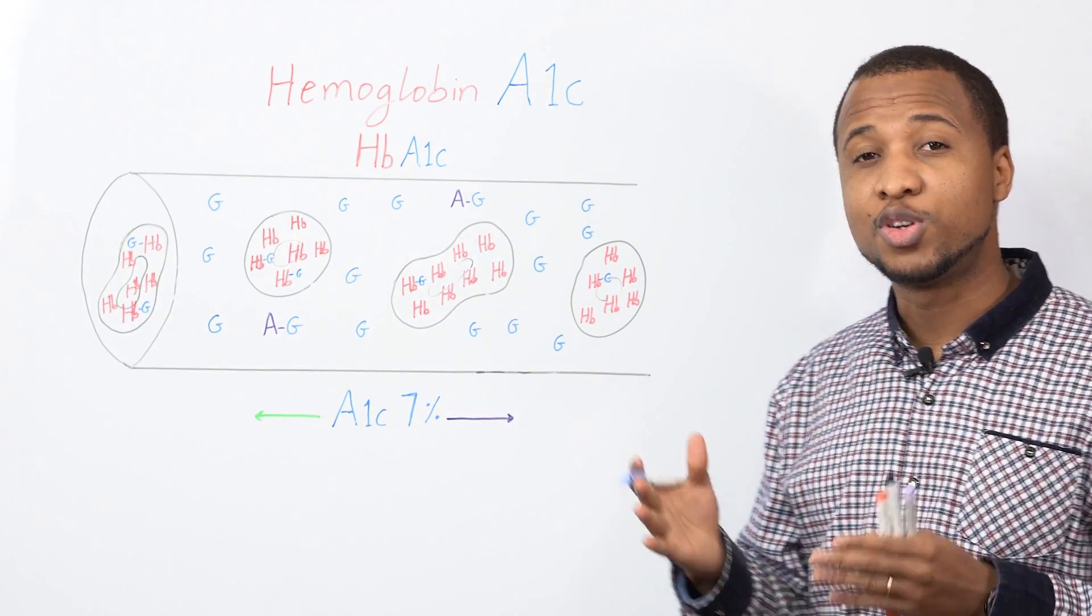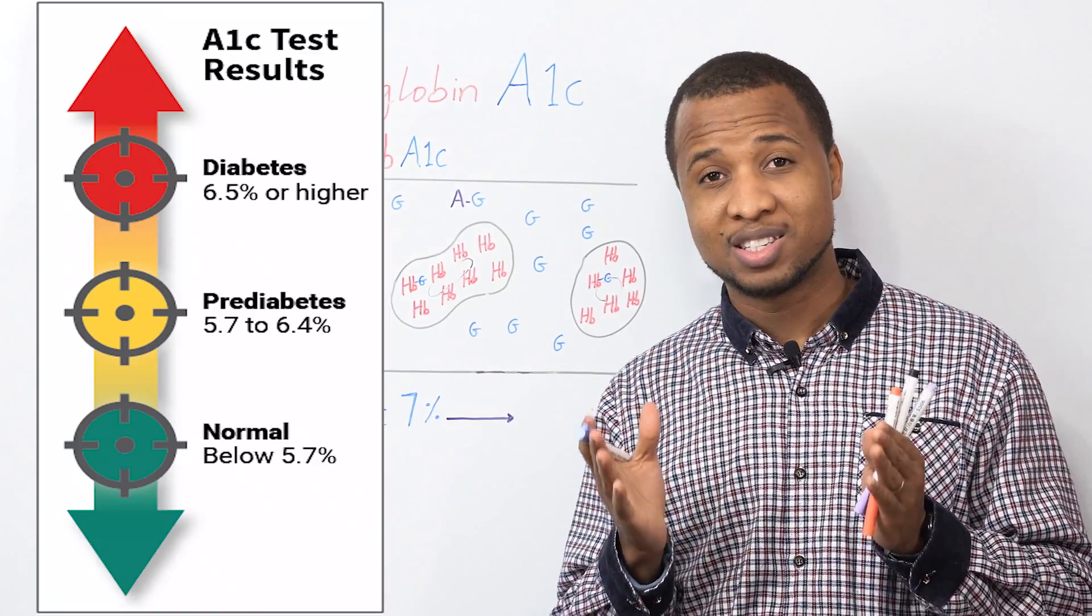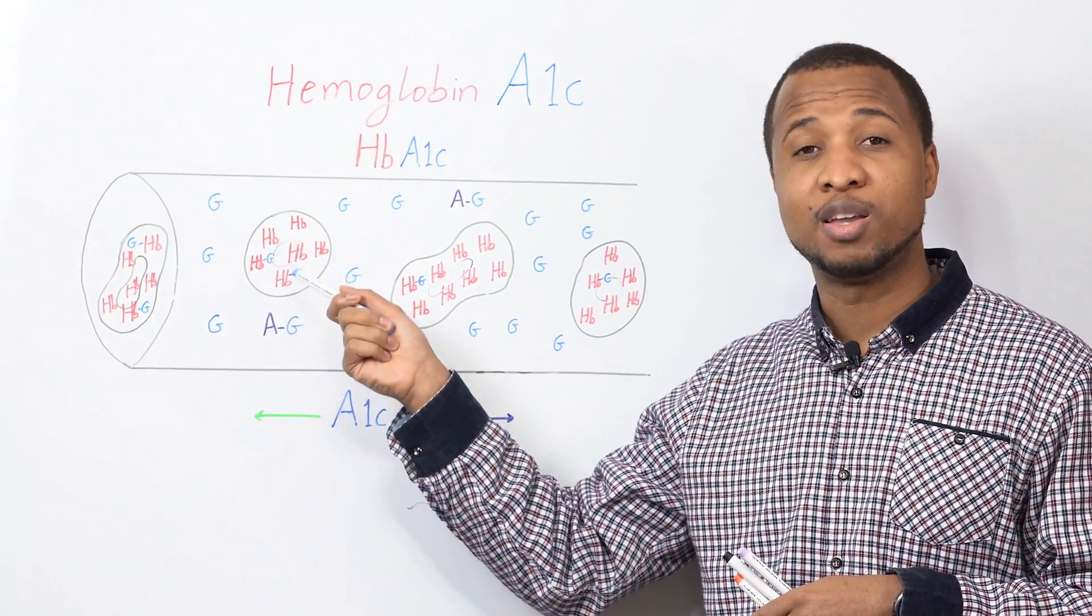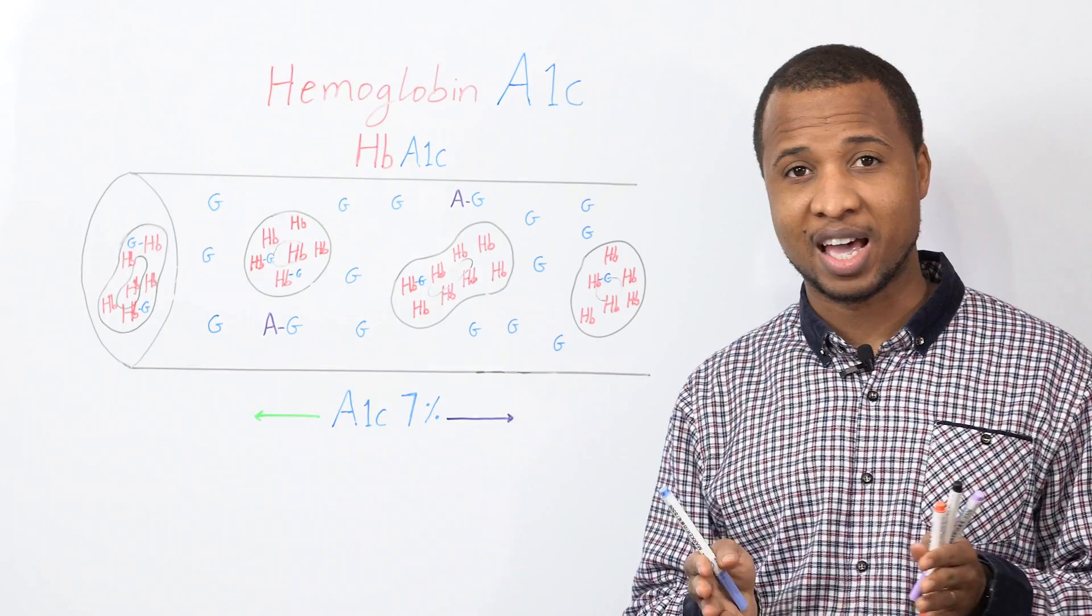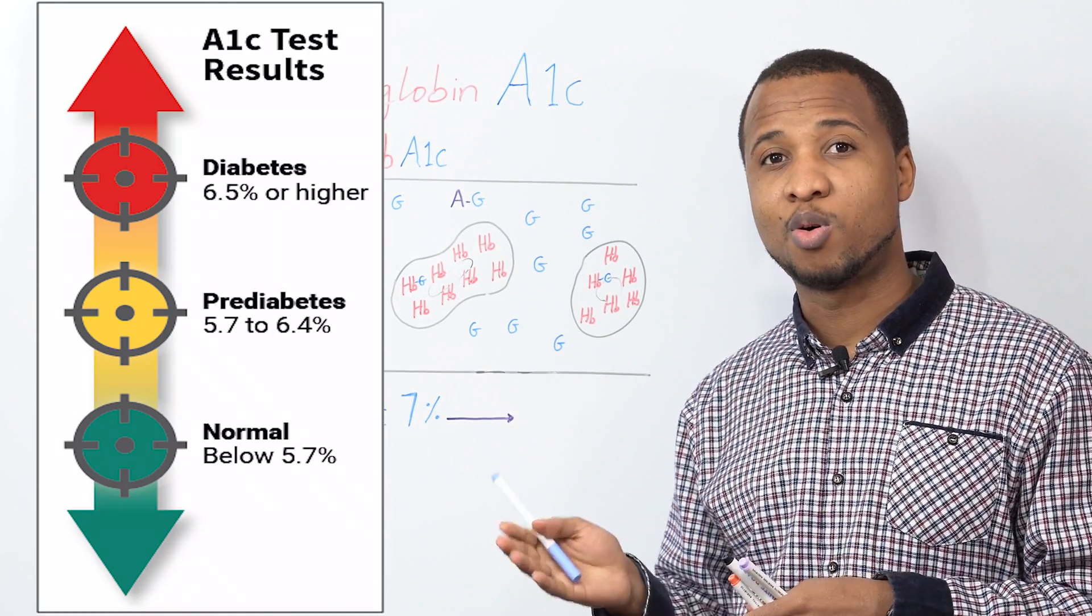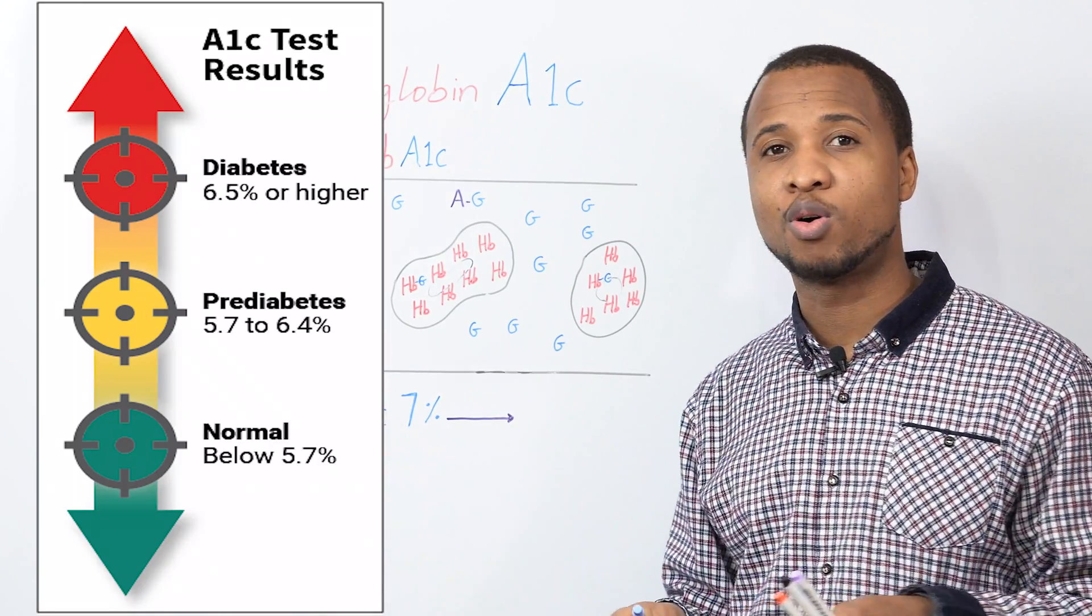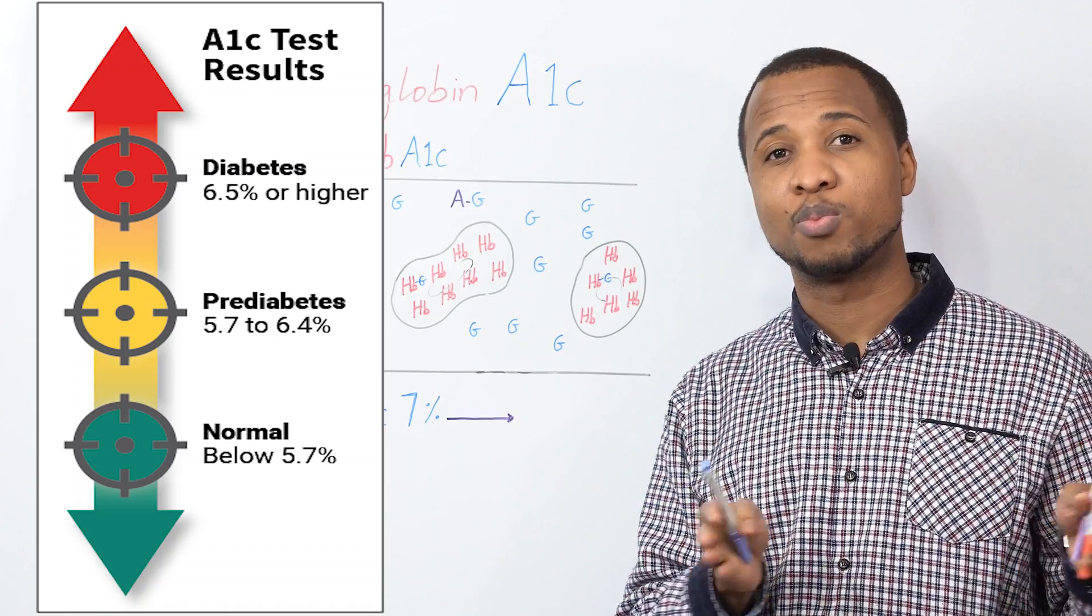And in general, if you don't have diabetes, less than 5.7% of these hemoglobins will have glucose attached to them. But for people with diabetes, they are 6.5% or more. And anything in between 5.7% to 6.4% is what we call pre-diabetes.